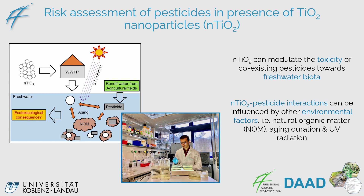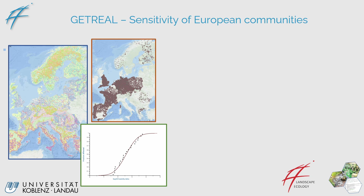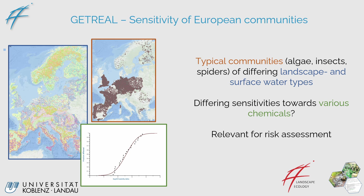We also have extensive work in the lab. For instance, one group is looking at how the toxicity of nanoparticles can interact with the presence of pesticides and how they affect freshwater biota, and how additional environmental factors such as natural organic matter or UV radiation can also alter these interactive effects. In the Get Real project, there is a large-scale evaluation of typical communities — algae, insects, and spiders — examining how they are distributed throughout Europe and how these communities change depending on the landscape and the surface water they inhabit, as well as how sensitive they are towards various chemicals, which is important for chemical risk assessment.